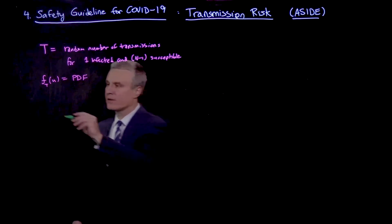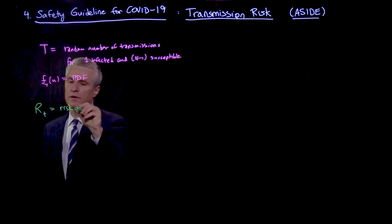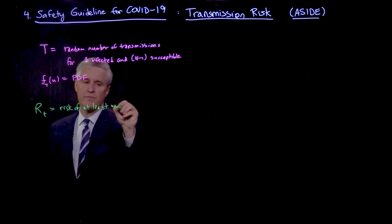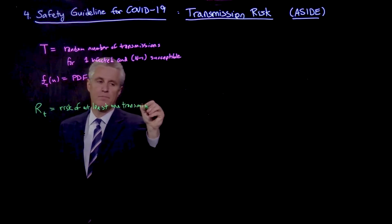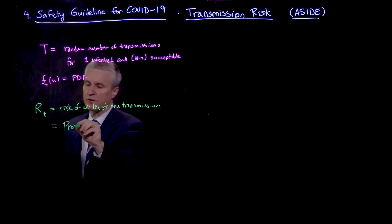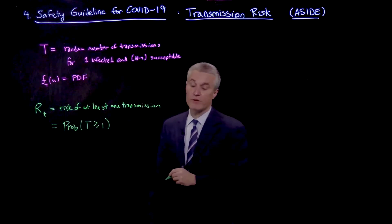And then we can define the risk of a transmission, the risk of at least one transmission, as the probability that this random variable takes on a value which is greater than or equal to 1.